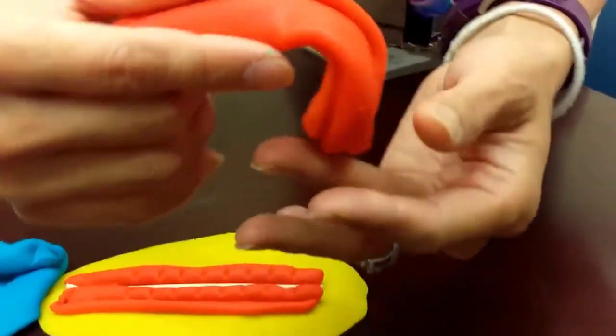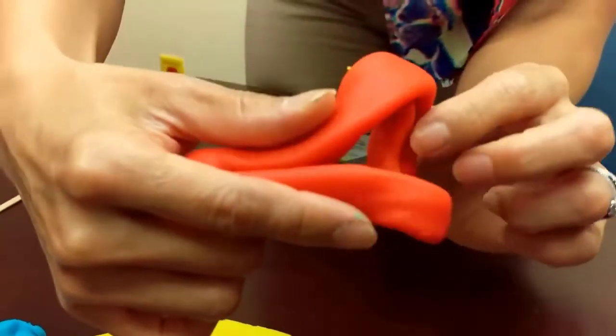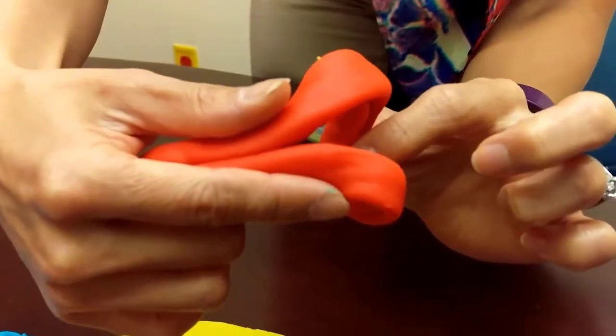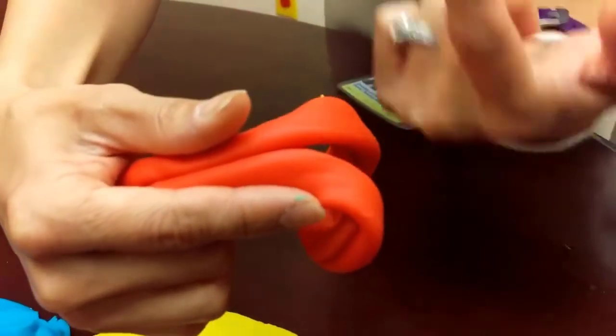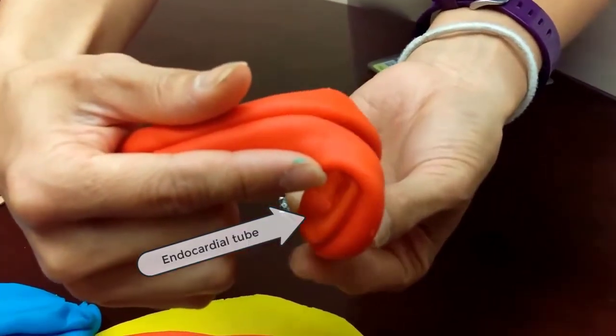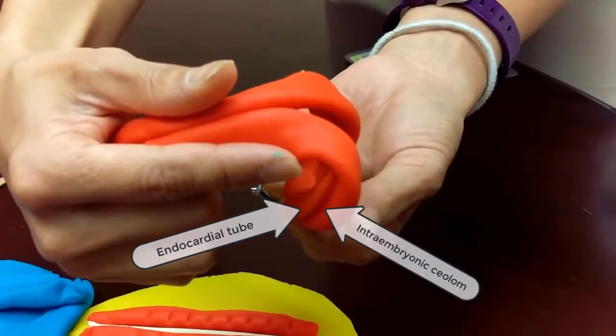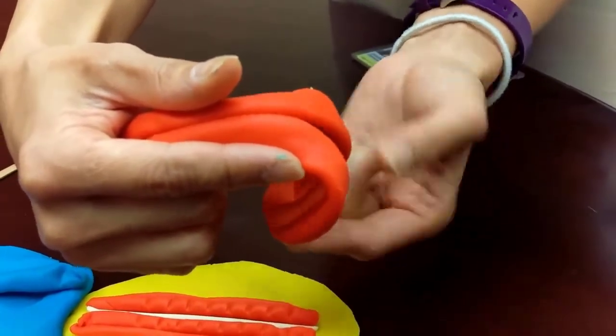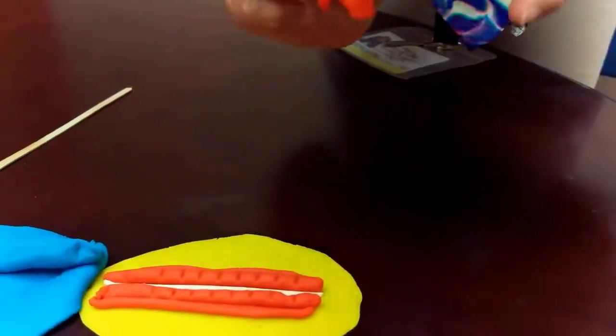So spatially speaking, the endocardial tube, which used to be ventral to the intraembryonic body cavity, ends up getting positioned dorsal to the intraembryonic body cavity, the future pericardium, turning the whole complex over for a ventral view.